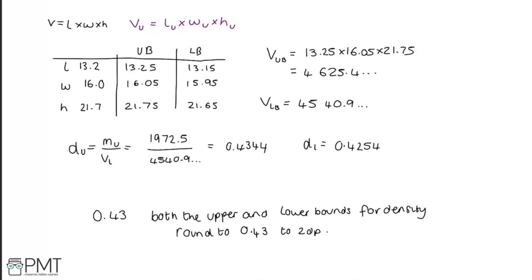For the mark scheme: one mark for working out one of the bounds, such as the upper bound for mass. A second mark for finding the bounds for volume. A third mark for the correct process to find the density bounds using the right formula. A fourth mark for both correct bounds for density to at least three significant figures. The final mark is for the conclusion and final answer of 0.43.